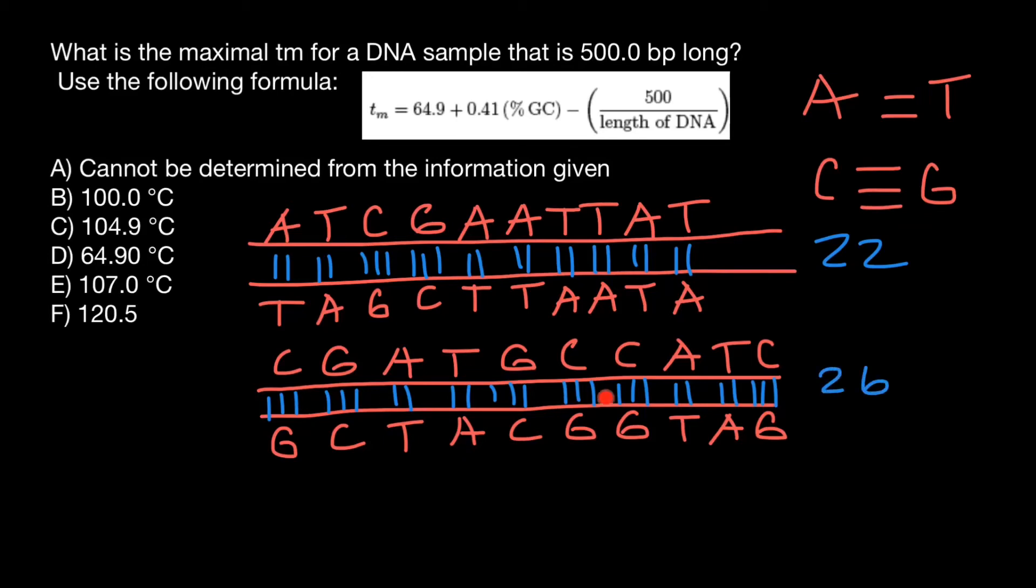Imagine that these hydrogen bonds are just like threads that hold two pieces of cloth. And of course, the more threads we have, the stronger connection is going to be. And though this double-stranded DNA and this double-stranded DNA has the same number of bases, ten bases, ten base pairs, both of them, but different number of hydrogen bonds. And of course, melting point of this double-stranded DNA would be slightly higher than of this one because more energy would be needed in order to separate these two strands of the DNA.